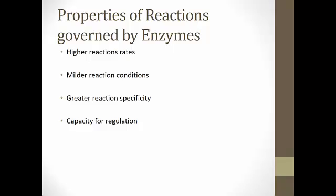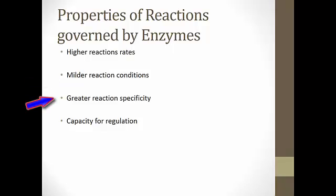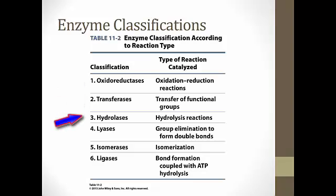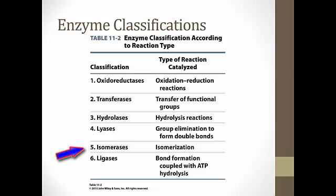There are a number of advantages to using enzymes to govern reactions, such as they allow for higher reaction rates, the ability to perform a reaction at milder conditions such as under physiological conditions of the cell. We can also have greater reaction specificity and a greater capacity for regulation. By utilizing inhibitors and activators, we can quickly control the rate of the enzymatic reaction. There are six basic enzymatic classifications, named after the types of reactions they catalyze: oxidoreductases perform oxidation-reduction reactions; transferases transfer functional groups; hydrolases utilize hydrolysis reactions to break one molecule into two; lyases do group elimination to form double bonds; isomerases perform isomerization reactions; while ligases couple two molecules to form a bond, typically utilizing ATP.